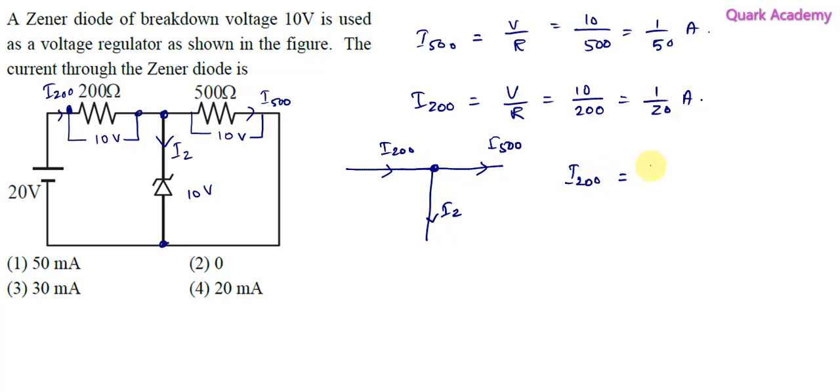So we want Iez, which will be I200 minus I500. Let's find this out by substituting: I200 is 1 by 20, I500 is 1 by 50. So this will become 50 minus 20 by 1000, which is equal to 30 by 1000 amperes. This can be written as 30 milliamperes.